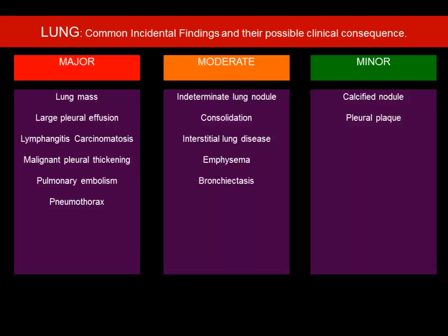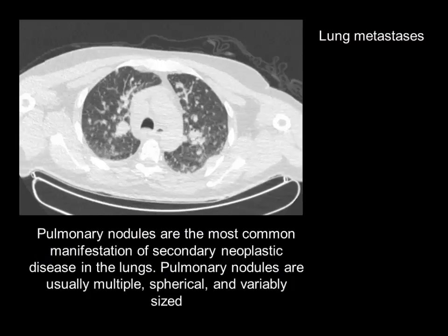Pleural plaques — in the era of asbestosis, most patients will have some pleural plaques. Pulmonary nodules are the most common manifestation of secondary neoplastic disease in the lungs. The nodules can be single or multiple, spherical or variably sized. You have to look for them, and if they are not there, you don't need to report.